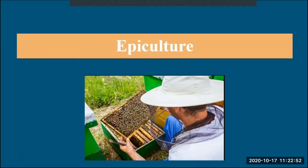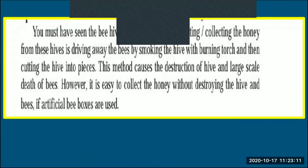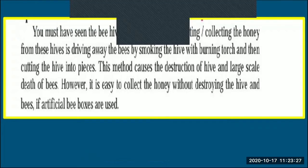Apiculture: the worst method of harvesting honey from hives involves driving away bees by smoking with a burning torch and cutting the hive into pieces. This traditional method causes large-scale destruction of the hive and death of bees. However, it is easy to collect honey without destroying the hive and bees if an artificial bee box is used.